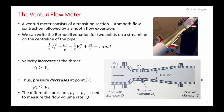A Venturi flow meter is an instrument you can insert in a pipe. It consists of a transition section where the flow is contracted and then followed by a smooth expansion. We can write Bernoulli's equation for two points on a streamline on the centerline of the pipe in the contraction zone — point one is upstream of the contraction and point two is right at the narrowest point.